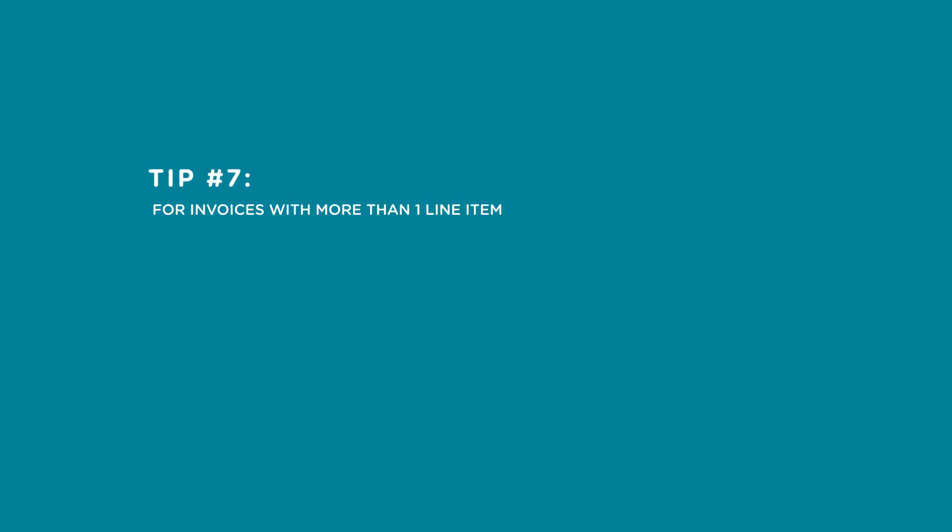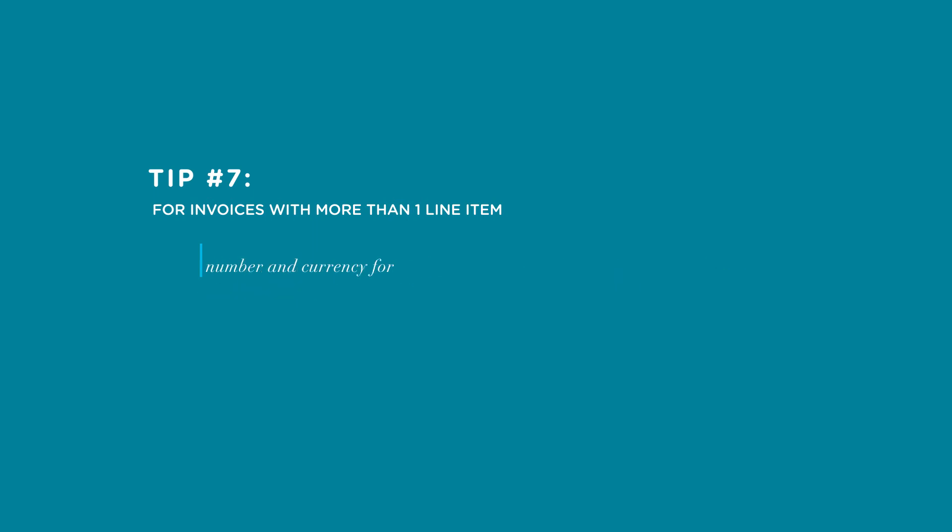The final tip, number seven: for invoices with more than one line item, each line item must include the same invoice number and currency for multi-currency invoices.